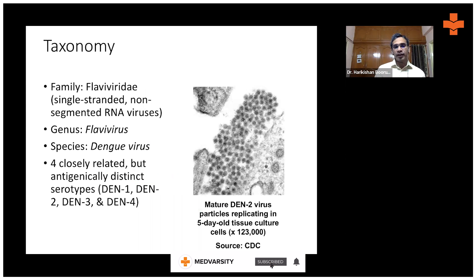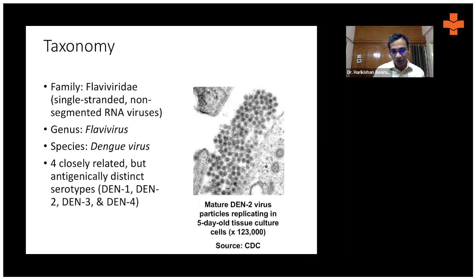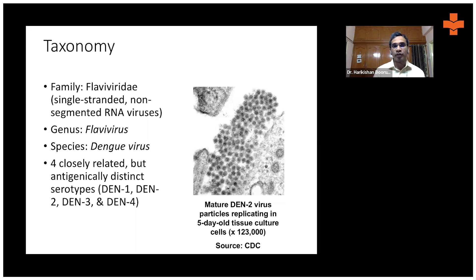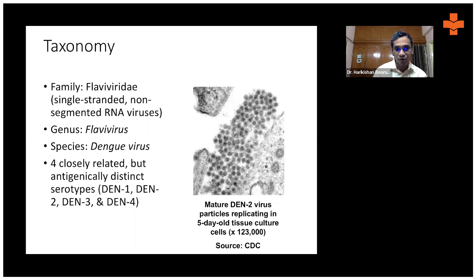Dengue — all of you would have definitely seen a patient with dengue, and some of you might have suffered from dengue. Dengue is a viral infection caused by the dengue virus. It belongs to the family Flaviviridae, genus Flavivirus, and the species dengue virus. There are four serotypes important for human infection: DEN-1, DEN-2, DEN-3, and DEN-4.